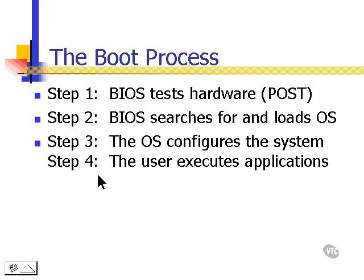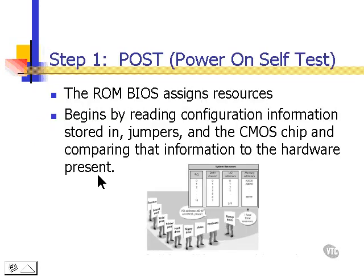Now let's take a look at each step closer. In step number one, the power-on self-test, ROM BIOS — which is that hard-coded information we spoke of before — begins reading configuration information, which is stored in jumpers as well as on the CMOS chip that we programmed with keyboard commands. The information is then compared with the hardware that's present in the computer. If there's configuration information for hardware that BIOS found, then that hardware will be set at this point.